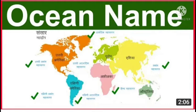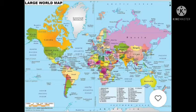The Pacific Ocean is the largest of all the oceans. India is surrounded by water on three sides, which is called a peninsula. A land covered by water on three sides is called a peninsula.